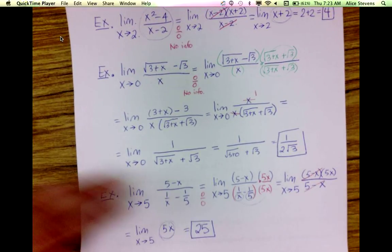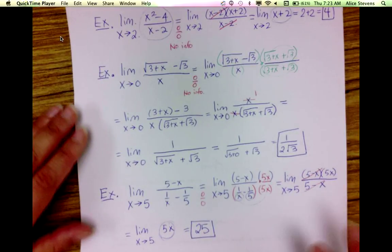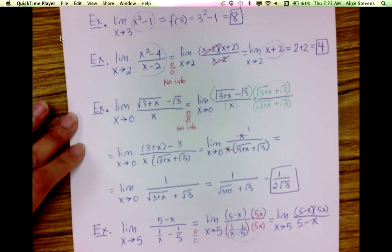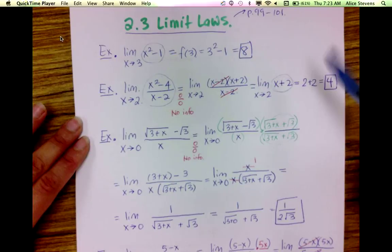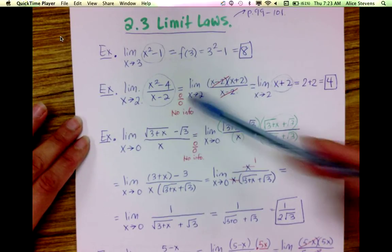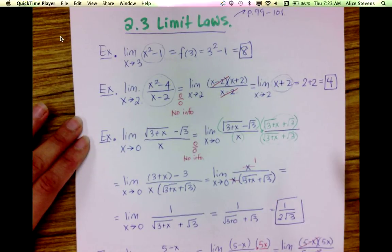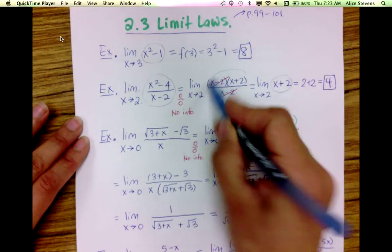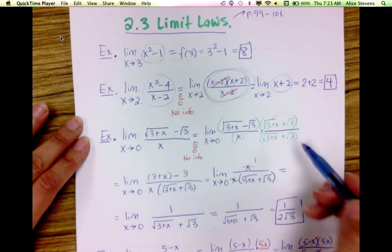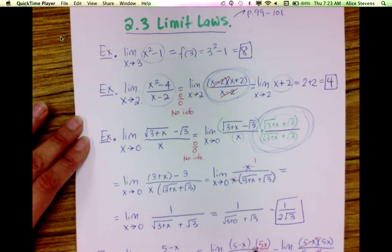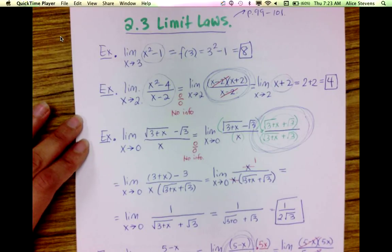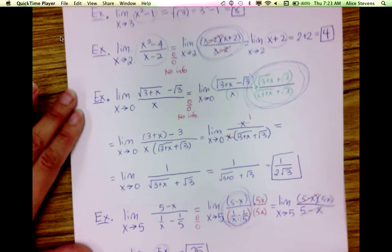So just to recap: when computing limits using direct substitution, as long as the function is nice enough to allow it, the main algebraic techniques we're going to use are factoring, multiplying by conjugates and rationalizing, and simplifying complex fractions or combining fractions.